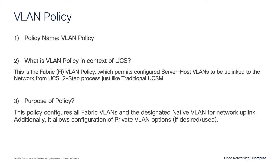It's very much a two-step process, just like legacy traditional UCS Manager, where you added VLANs to the LAN cloud for the fabric. And then you went to each and every service profile, usually your VNIC templates, and added the VLANs there. The purpose of the policy here is to configure your fabric VLANs on the FIs, and it also lets you designate a native VLAN.